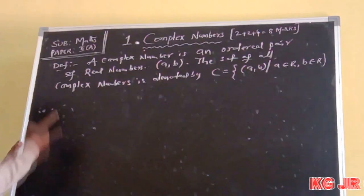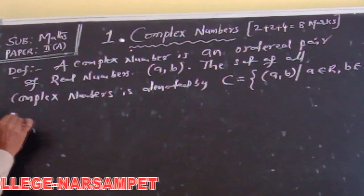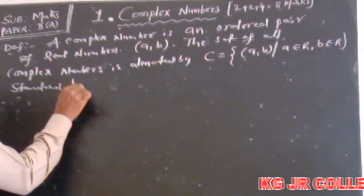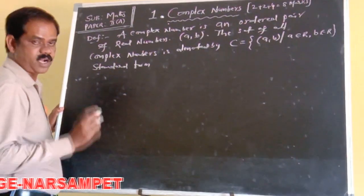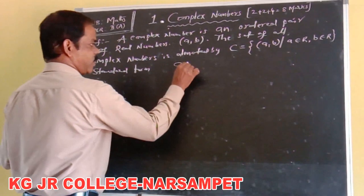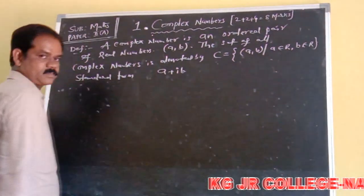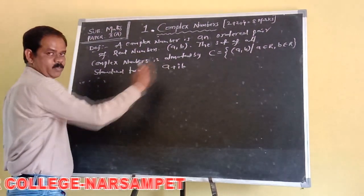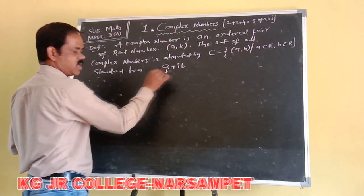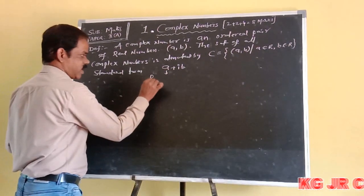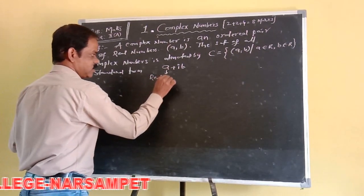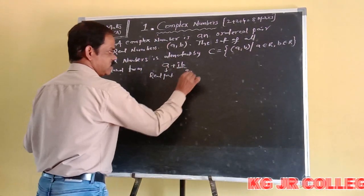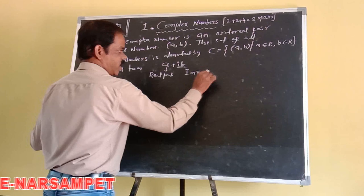Next, the standard form of the complex number is a + ib. What is the standard form? a + ib. Here, small a is called the real part, and ib is called the imaginary part.